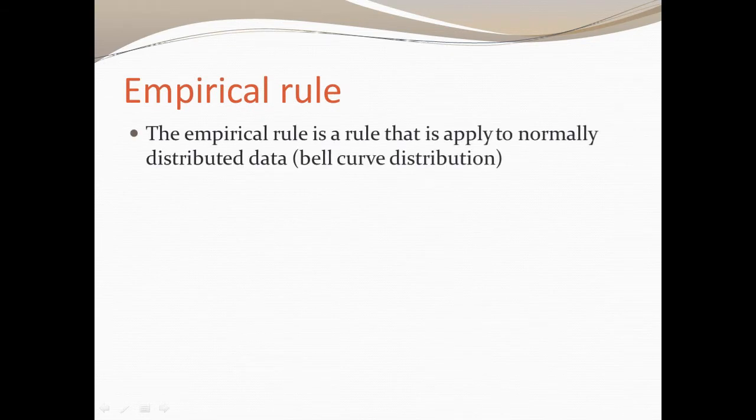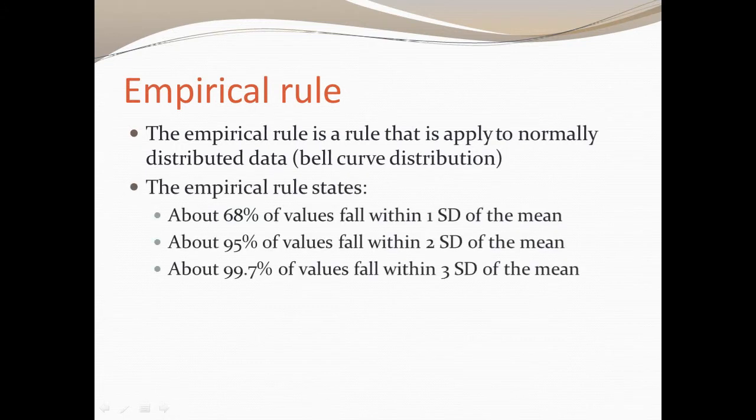The empirical rule is a rule that involves distributed data only when it's normally distributed. It has to have the bell curve distribution or somewhat close to it. The empirical rule states that 68% of values will fall within one standard deviation of the mean. When we say one standard deviation, we're talking about one above and one below. 95% of values will fall within two standard deviations, and 99.7% or mostly all values will fall within three standard deviations of the mean. We leave that 0.3 of an error just in case we have those unusual outliers.